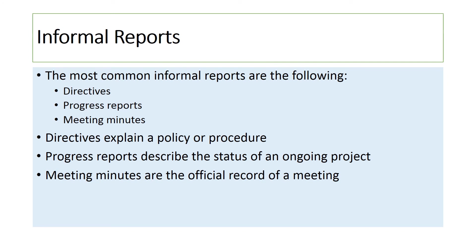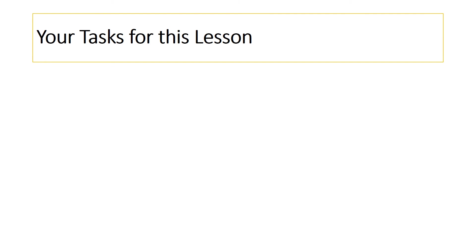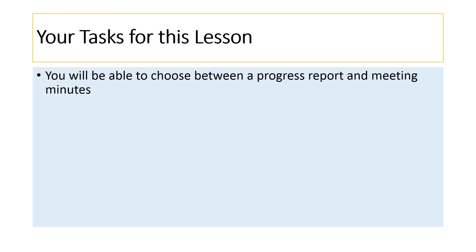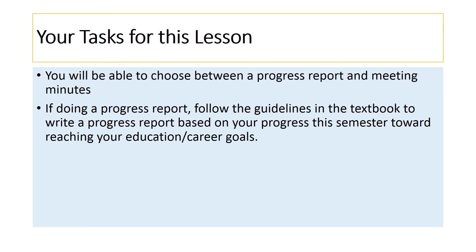Especially pay attention to the progress reports and meeting minutes for the purpose of this week's assignment. Your task for this lesson is to write an informal report in the format of a memo. You can choose between writing a progress report or writing meeting minutes. If you choose to write a progress report, you will be writing about your progress made toward attaining your educational or career goal. You will describe your long and short-term goals and what you have accomplished in the past and particularly this semester towards reaching this goal. Also describe what you expect to accomplish in the next few semesters or years.